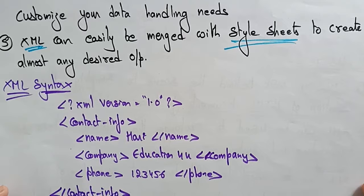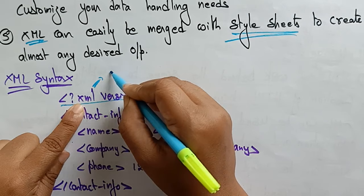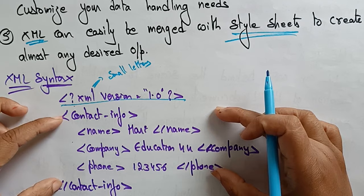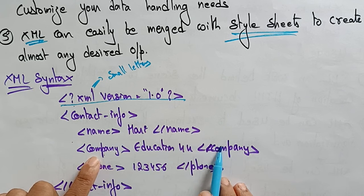Let's see the syntax of XML. This is the declaration first — the version we are using: XML version equals 1.0. You have to use small letters; it is case sensitive. Here is the contact information I want to print on the screen — the name tag, the company tag with the company name in between, and the phone number tag, then the contact information closing tag.